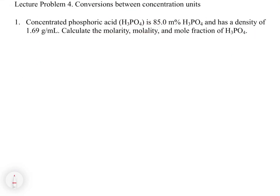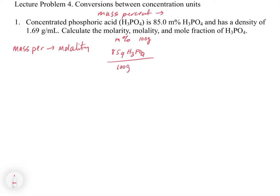The last problem asks us to do a conversion where we convert mass percent to molarity, molality, and mole fraction. Let's do one of the easier ones first — converting to molality. We write down what we need for each. For mass percent, we have 85%. If we assume 100 grams of solution — which is the most convenient choice — then we have 85 grams of H₃PO₄ per 100 grams total (H₃PO₄ plus water). For molality, we need moles of H₃PO₄ per kilogram of solvent, so we have to work out both of those.